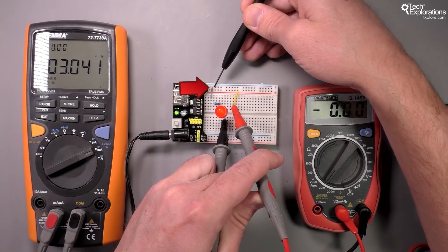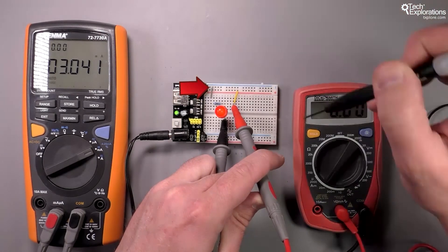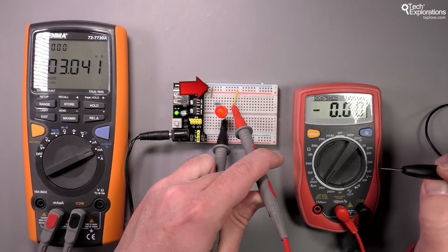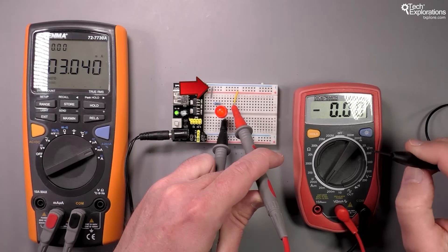From there it will sink, as they say, into the blue rail, the ground rail of the breadboard.